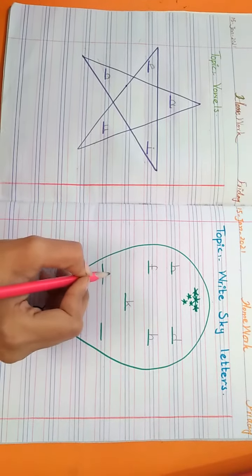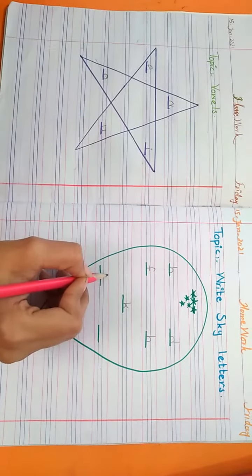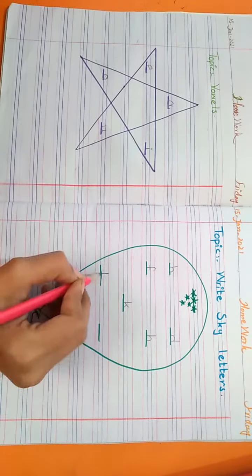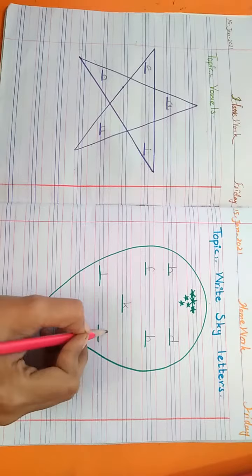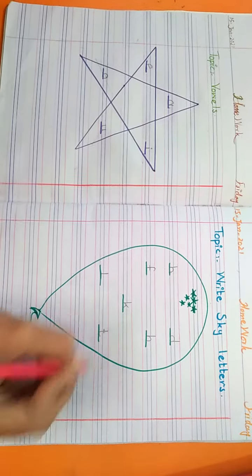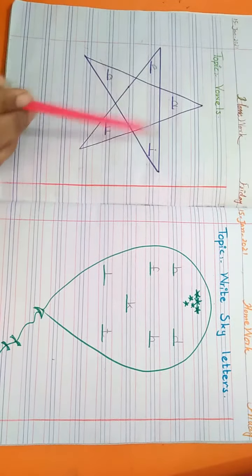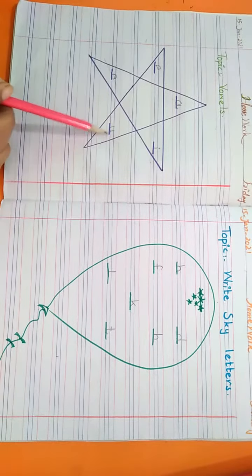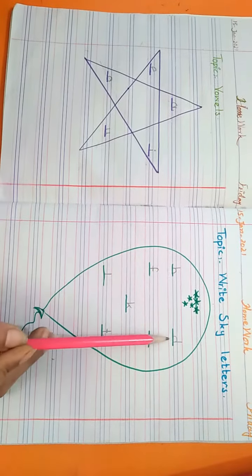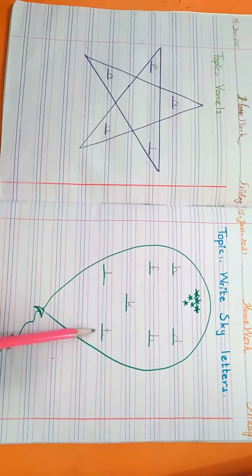These all letters we write in small, in lowercase. Sixth one is L and the last one is T. Okay, let's repeat. Vowels: A, E, I, O, U. The sky letters are B, D, F, H, K, L, T.